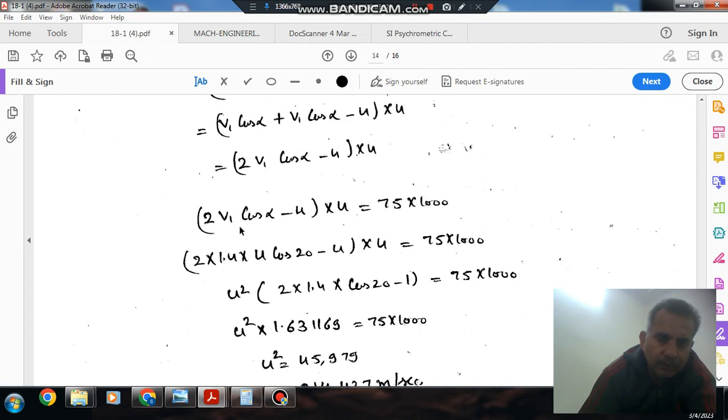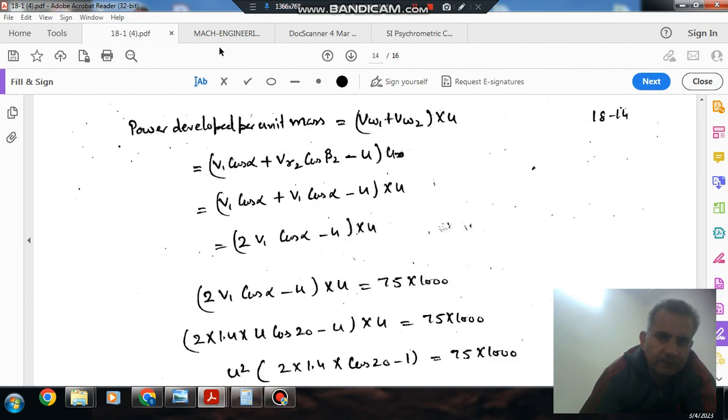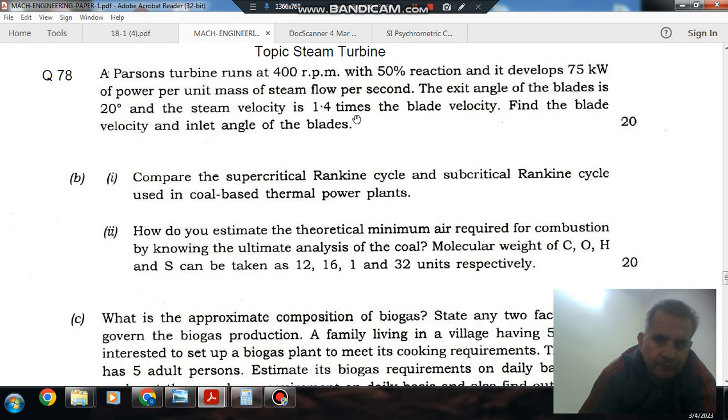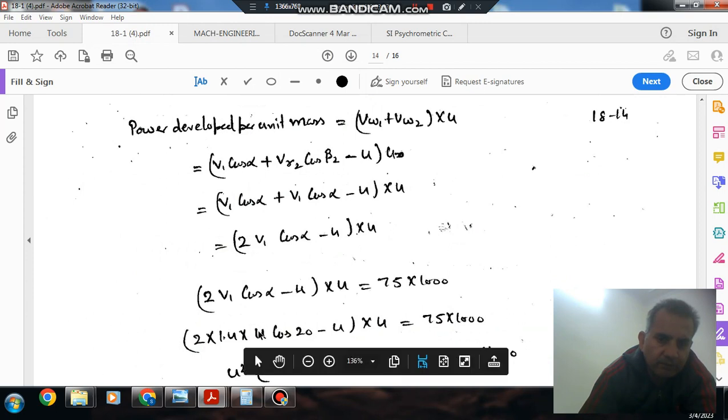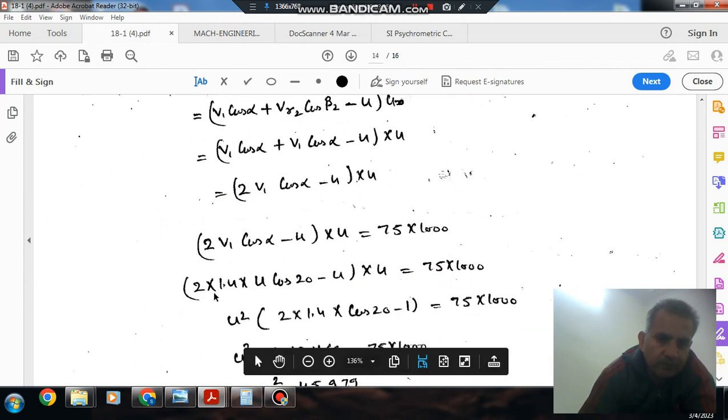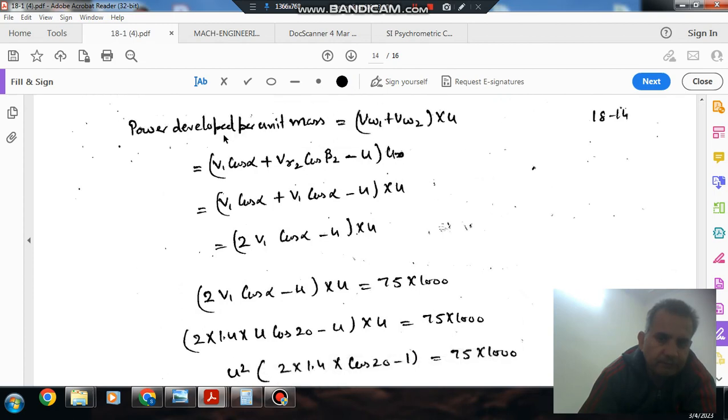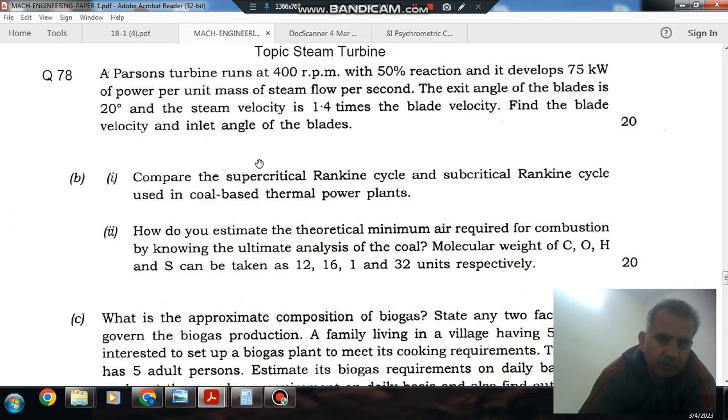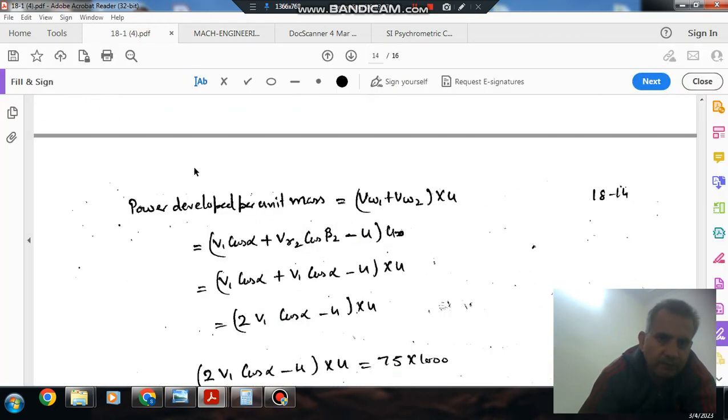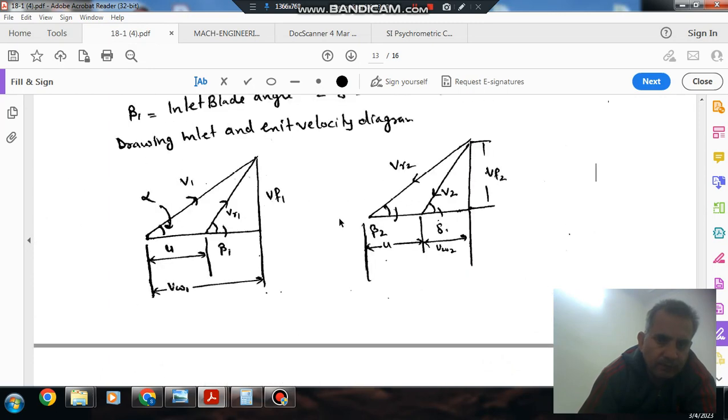It is also given that the steam velocity is 1.4 times the blade velocity, meaning V1 equals 1.4U. Also, alpha equals beta2, which is given as 20 degrees.